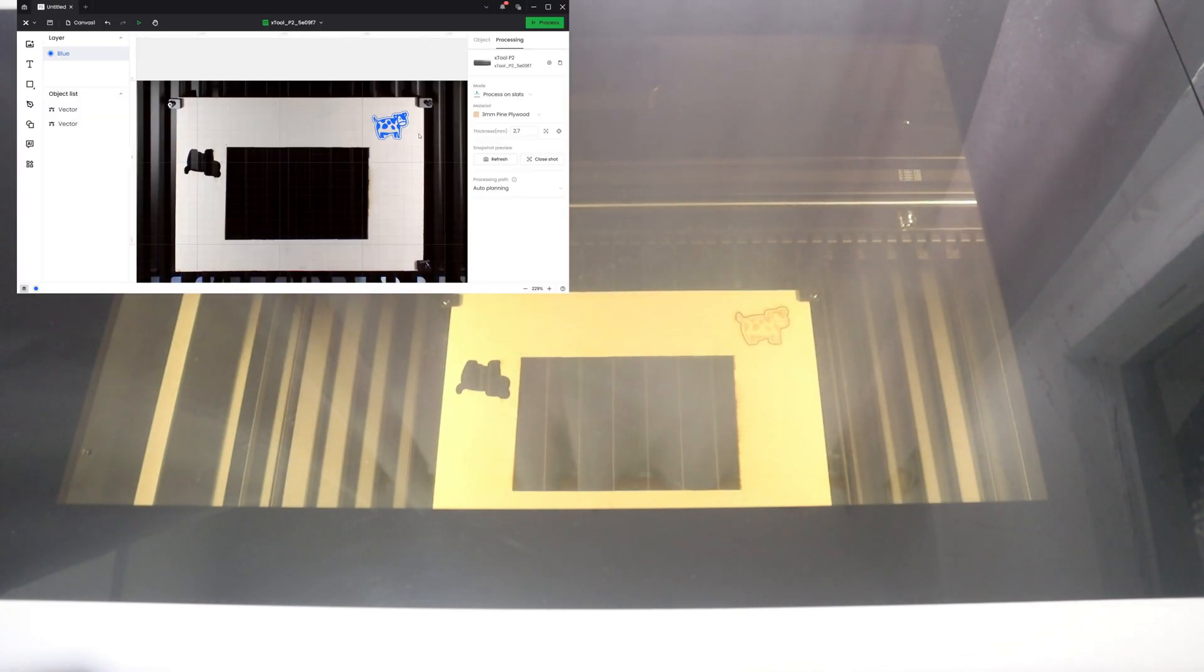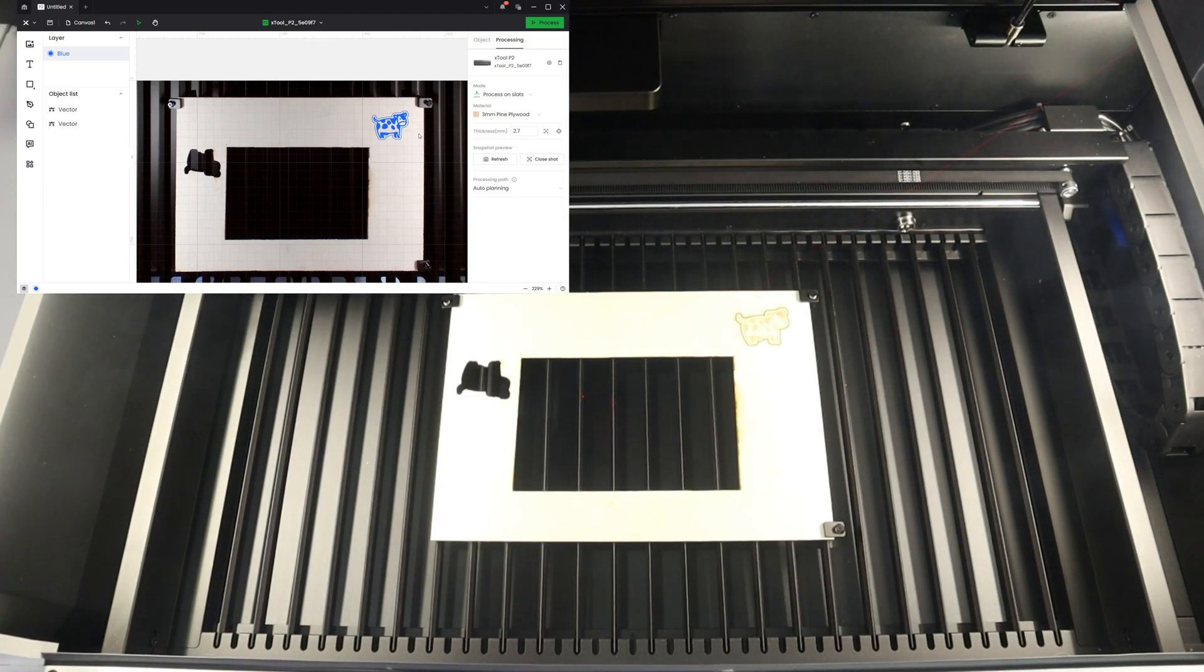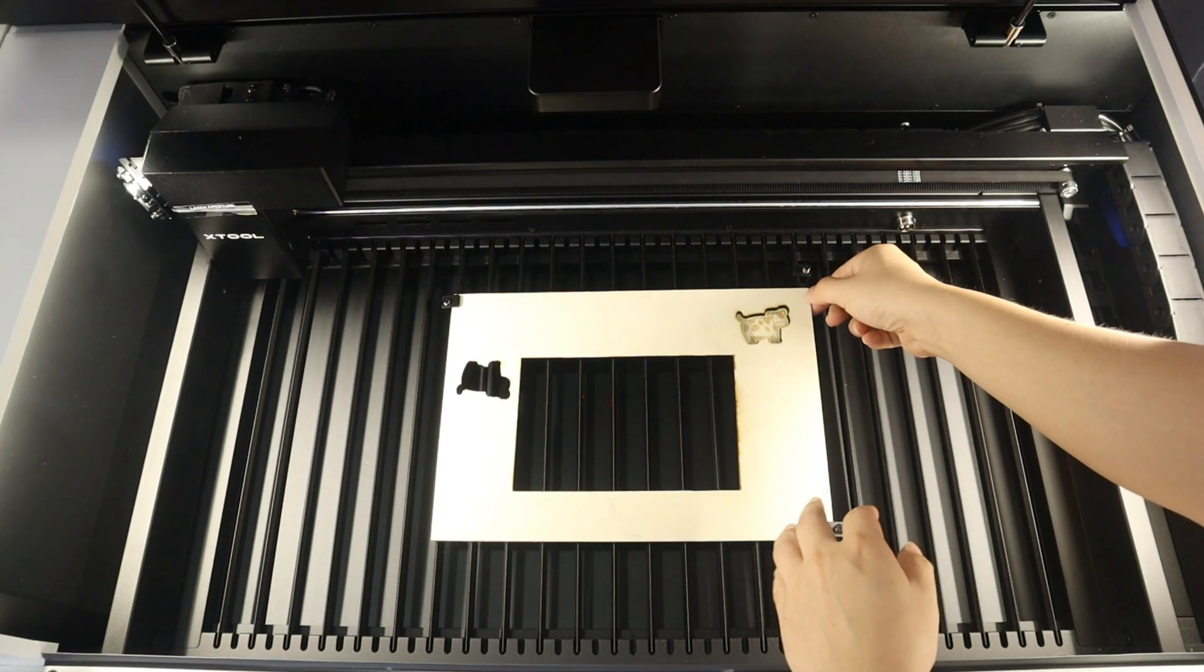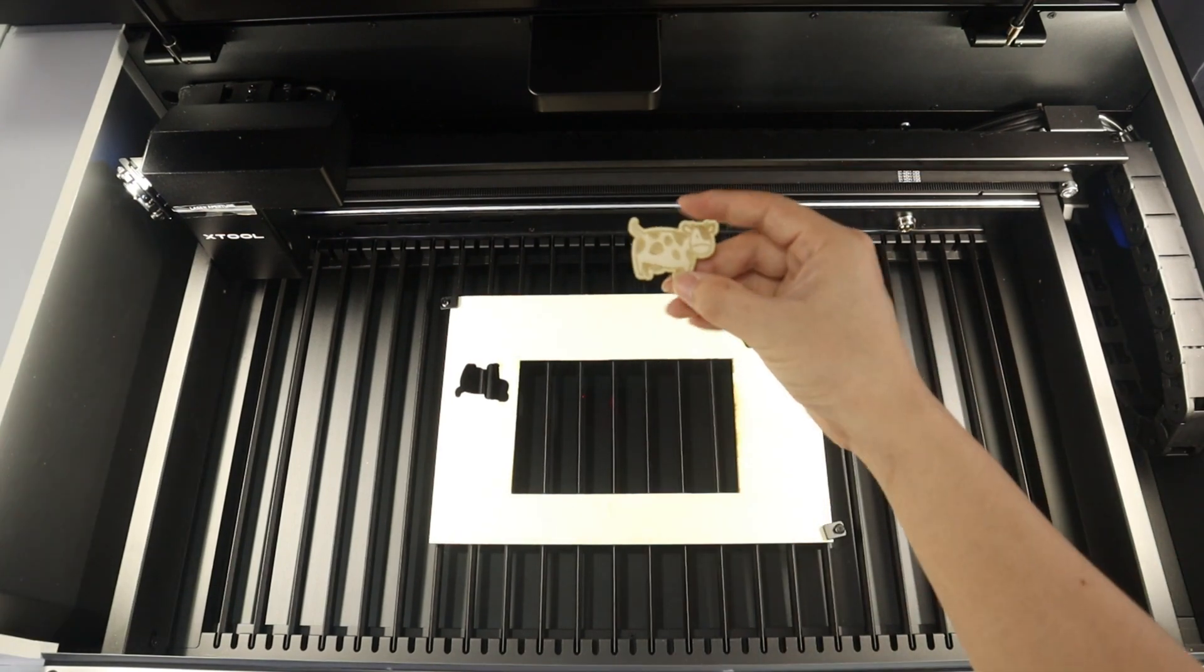As you can see, the X2P2 engraves and cuts in the precise positions with great precision. The autofocus and precise positioning functions therefore simplify our work steps and allow us to concentrate more on our creations.